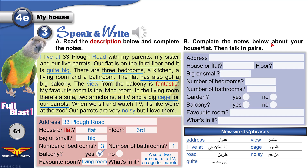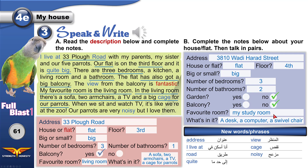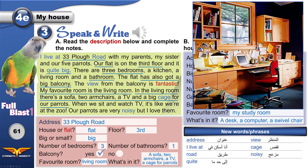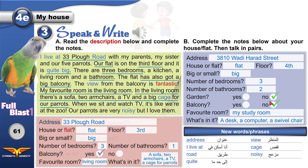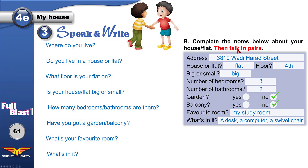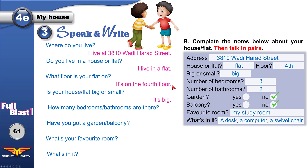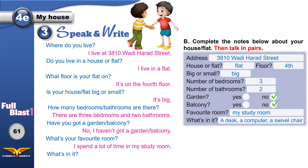Complete the notes below about your house or flat, then talk in pairs. This is the information — the details of my flat. My favorite room is my study room. The study is a room where you work or study. In this room I have a swivel chair. I live at 3810 Wadi Harad Street. It's a flat. It's on the fourth floor. It's big. Finish answering the questions.